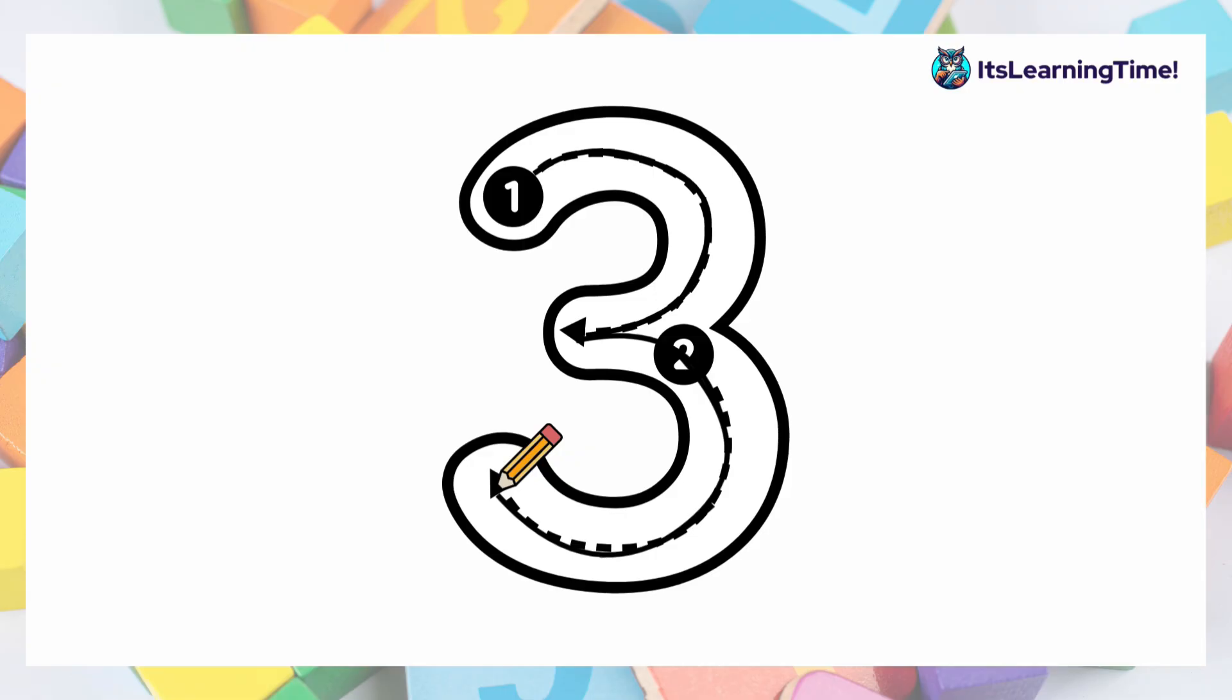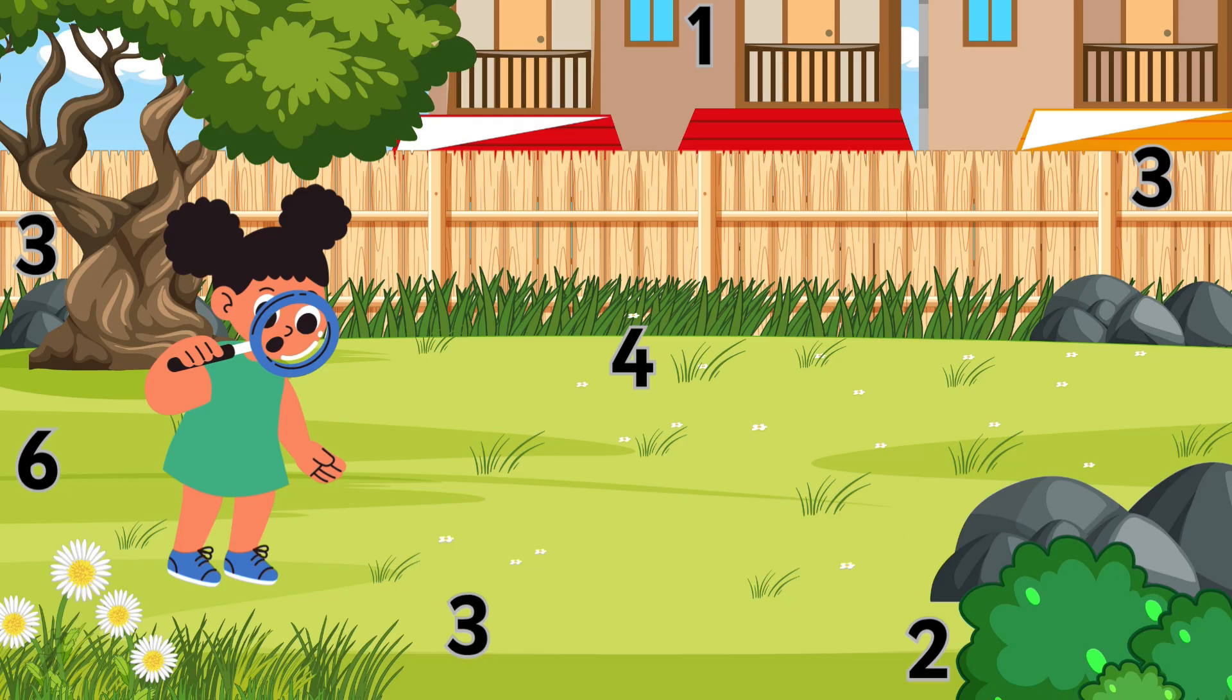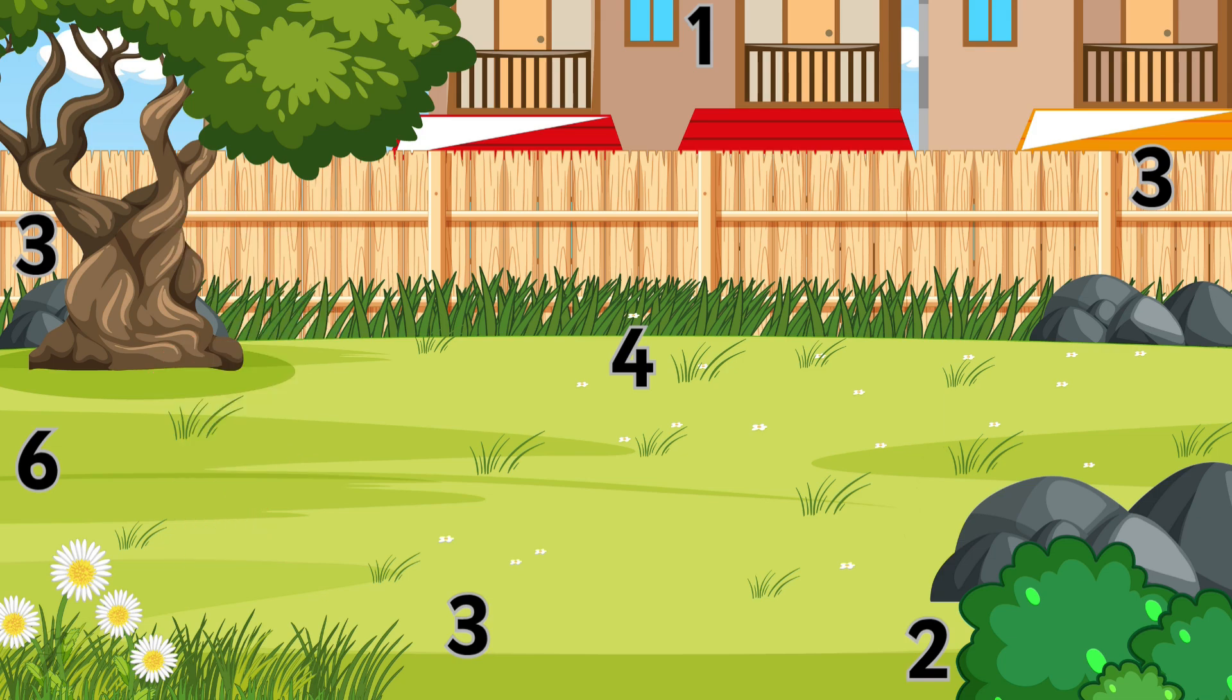So to write number three you need a curve and another curve. Let's see if you can identify number three in this garden. There is three on the grass. Another three on the wall.